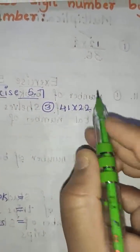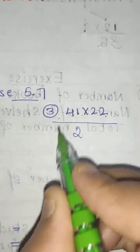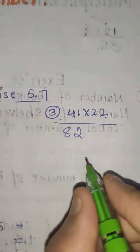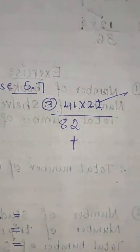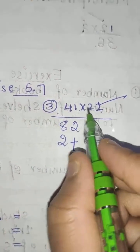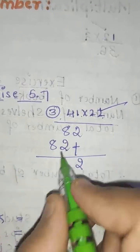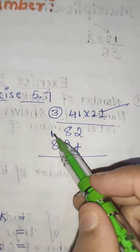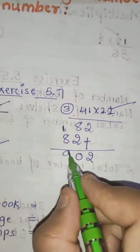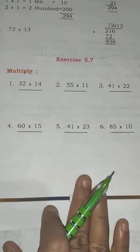41 into 22. First, 2 ones are 2, and 2 fours are 8. Now come to the tens place: 2 ones are 2, 2 fours are 8 — put the plus mark. Adding: 2 is 2, 8 plus 2 is 10 — write 0 and 1 carries over. 1 plus 8 is 9. So the answer is 902. Try to do the 4th, 5th and 6th examples by yourself.